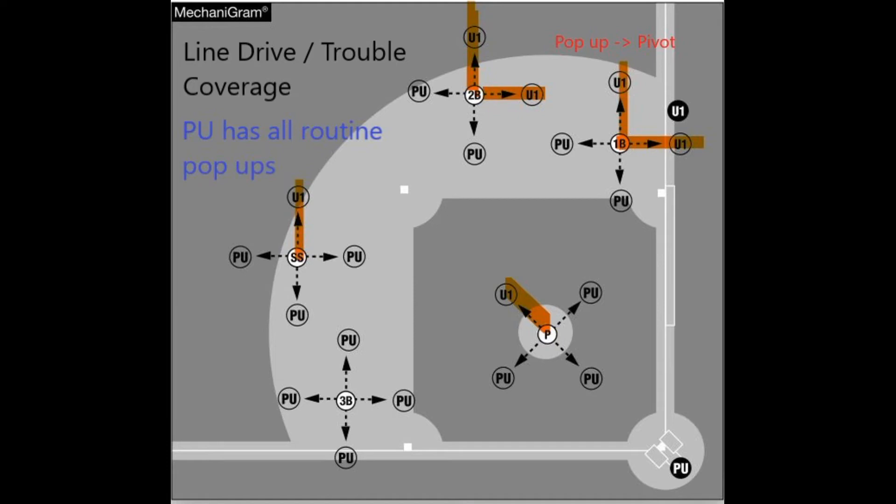On any routine pop-up to the infield, the base umpire will move into the middle of the infield to accept responsibility for the batter runner at first and second base. An easy way to remember this is pop-up means pivot. Pivot means come to the infield and accept responsibility on the batter runner at first and second base.